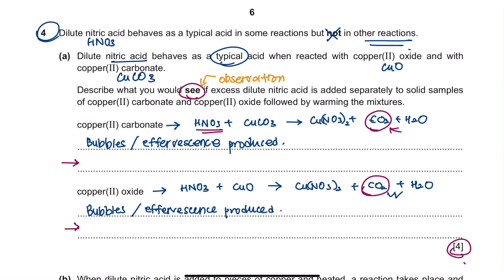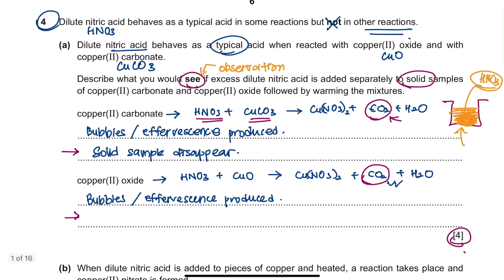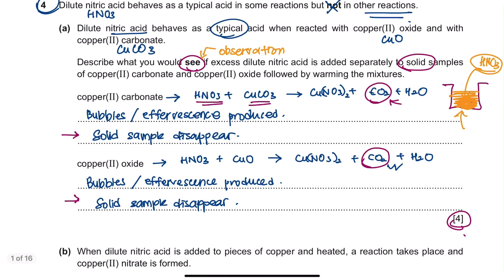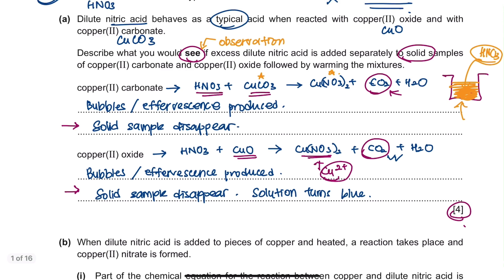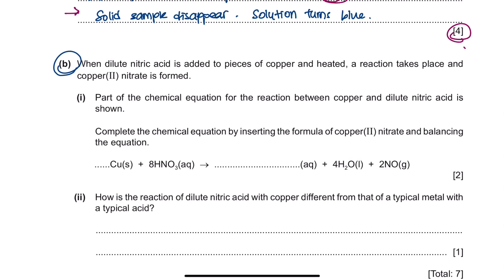Since you are adding nitric acid to a solid sample, the acid will dissolve the solid completely. So you will observe that the solid sample disappears, and the same would happen for copper oxide. There is another observation for copper oxide: since copper oxide is a black powder and it forms copper nitrate, copper nitrate contains Cu2+ ions. Since Cu2+ ions are blue in color, the solution formed would be blue. Copper carbonate is also blue, so the solution remains blue for the copper carbonate reaction as well.